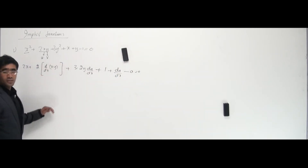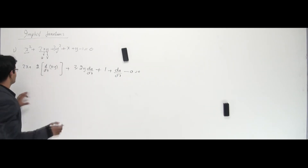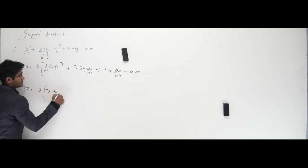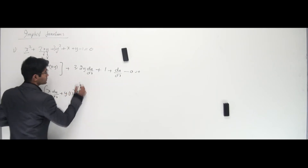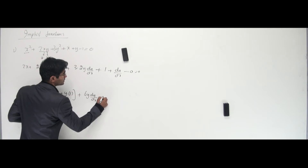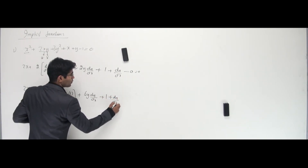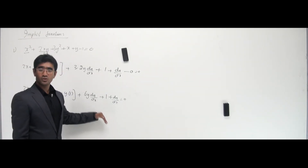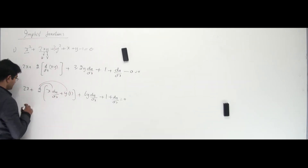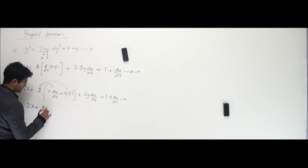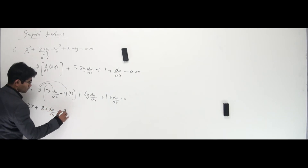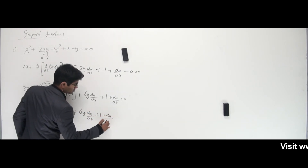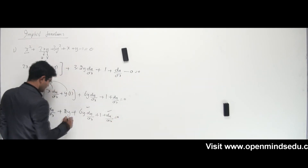The derivative of x is 1 and the derivative of y is dy/dx, minus 0 equals 0. Now I still need to differentiate these terms using the product rule. So it goes like 2x plus 2 times (x into dy/dx plus y into 1), and that gives 6y into dy/dx plus 1 plus dy/dx.